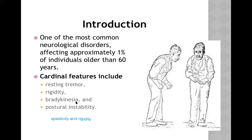Bradykinesia means decreased movement — the person has slow, hesitant movement. Looking at a picture of a patient: the old person is slightly stooping, bent forward, walking very slowly, appearing to scan the floor. The top three cardinal features — resting tremor, rigidity, and bradykinesia — are far more important than postural instability, which may not be present in all patients.